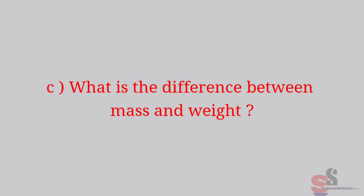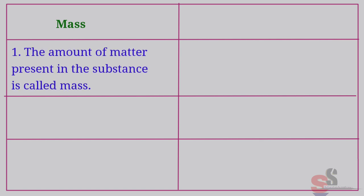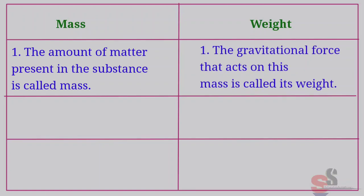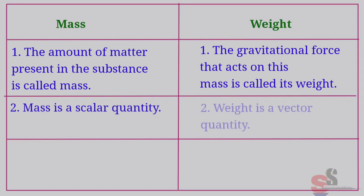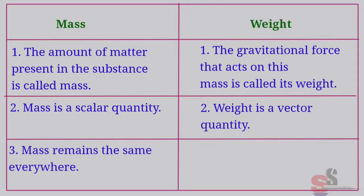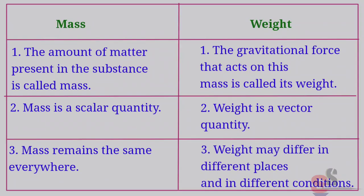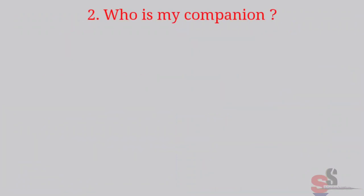The amount of matter present in the substance is called mass. Now, we will see what is meant by weight. The gravitational force that acts on this mass is called its weight. Mass is a scalar quantity. Weight is a vector quantity. Mass remains the same everywhere. Weight may differ in different places and in different conditions.